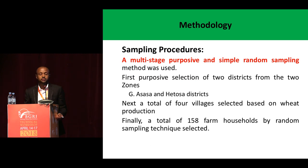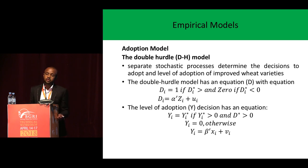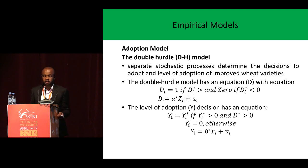When it comes to the methodology, the sampling procedure followed is a multi-stage random simple sampling method. We selected two districts from the two zones, namely RDC and West RDC zones, and finally selected a total of 158 farm households by random sampling technique. To identify the determinants of adoption, we applied a double-hurdle model, which is most commonly used in studies measuring or estimating determinants of adoption.